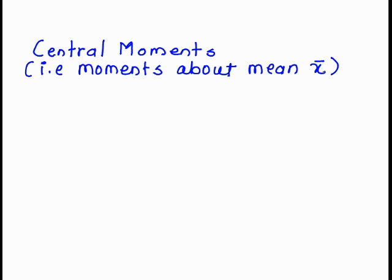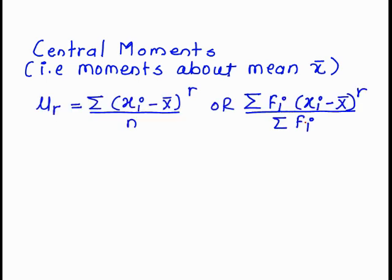First of all we study central moment. The formula of a central moment, that is moment about mean X bar, has two forms: mu r is equal to summation of (xi minus X bar) raised to r upon n, or summation of fi times (xi minus X bar) raised to r upon summation of fi, depending upon the data.